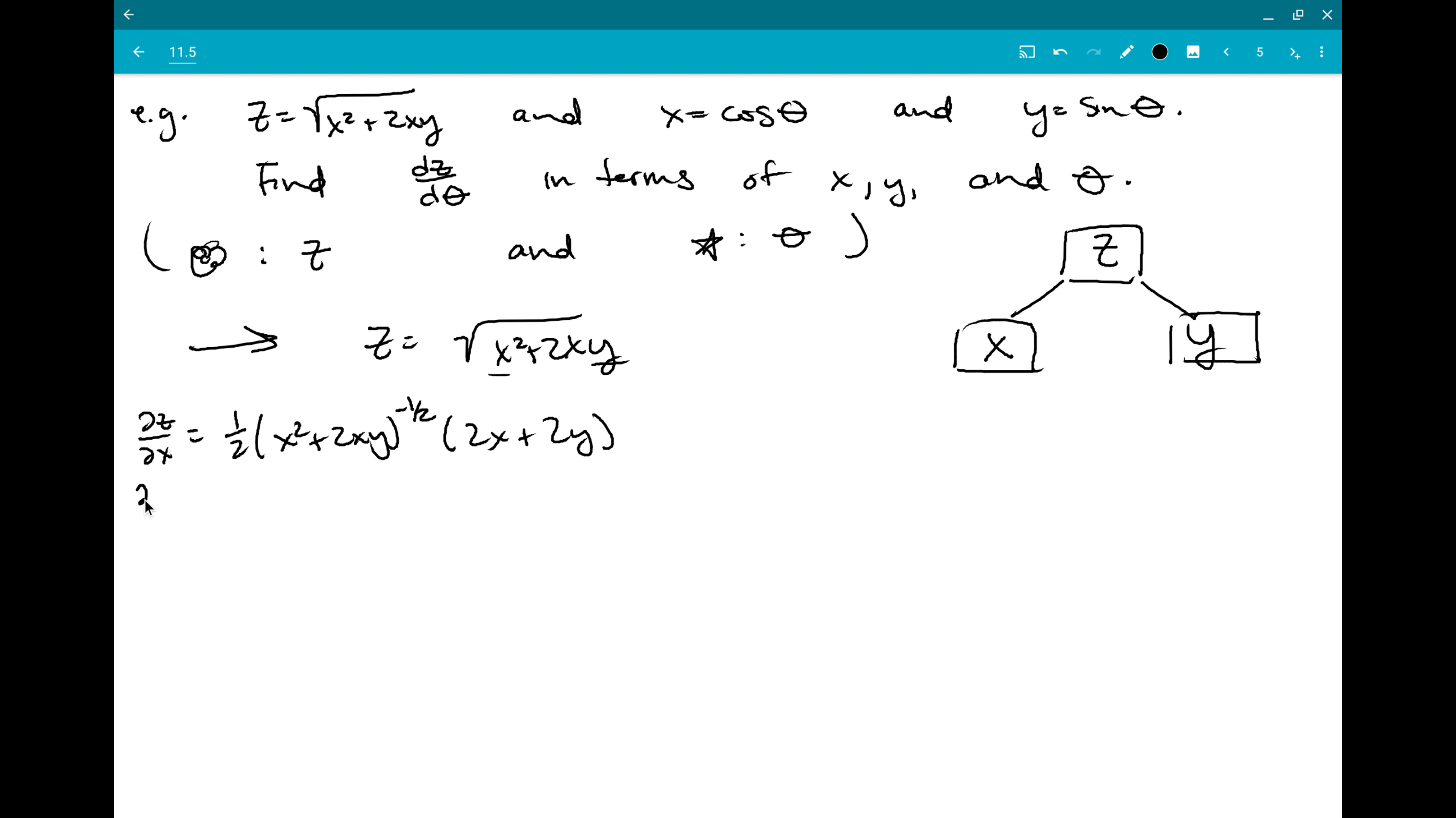And then I'm going to need dz dy. So that gave me that dependence. I want this one as well. So it's, again, going to give me a 1 half x squared plus 2xy to the minus 1 half. And then I have to multiply by the partial derivative of the interior with respect to y. That just gives me 2x. And I know I'll need this eventually, but I'm not using it quite yet. And I'll just write right there that I found dz dx and dz dy.